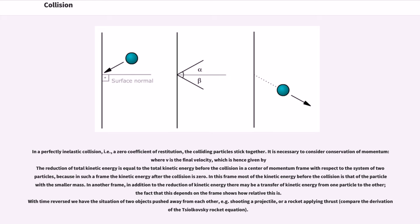Because in such a frame the kinetic energy after the collision is zero. In this frame most of the kinetic energy before the collision is that of the particle with the smaller mass. In another frame, in addition to the reduction of kinetic energy there may be a transfer of kinetic energy from one particle to the other, the fact that this depends on the frame shows how relative this is. With time reversed we have the situation of two objects pushed away from each other, for example shooting a projectile, or a rocket applying thrust.